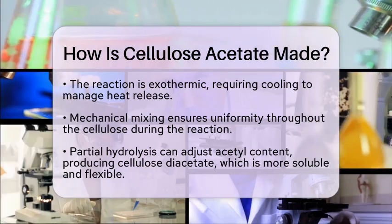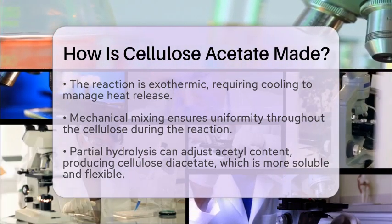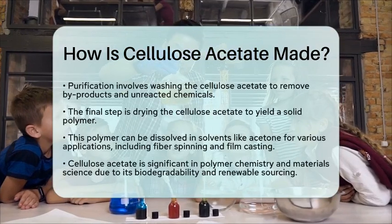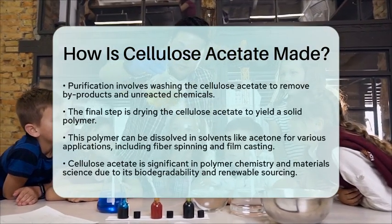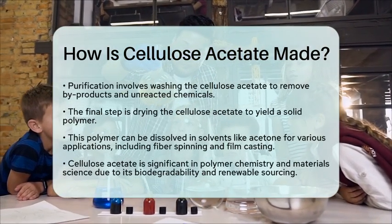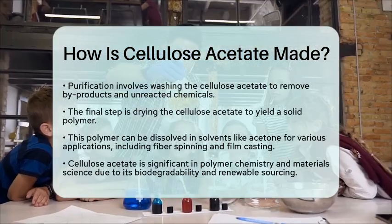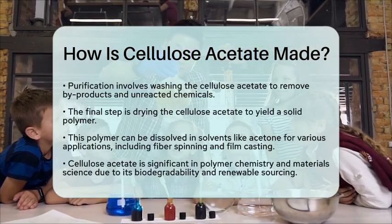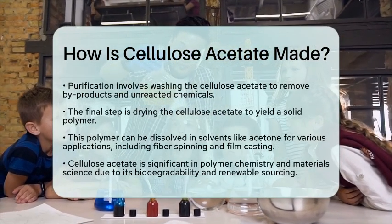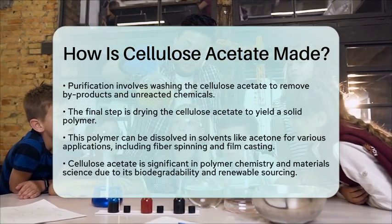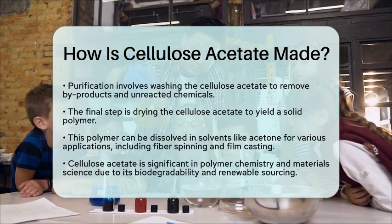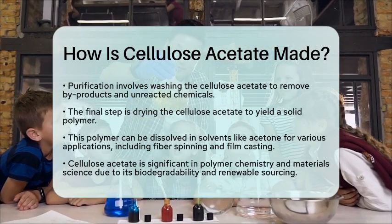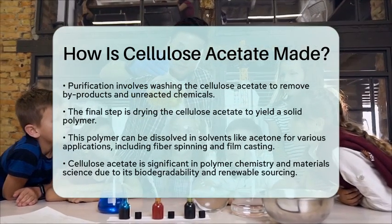From a chemistry perspective, cellulose acetate is a derivative of cellulose formed by esterifying the hydroxyl groups with acetic acid derivatives. The conditions of the reaction, the catalysts used, and the degree of substitution all play a role in determining the final properties of the cellulose acetate.